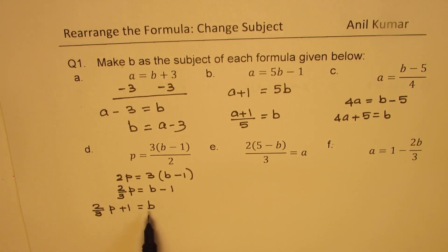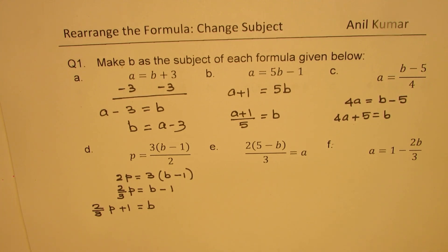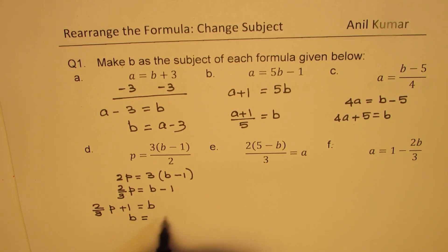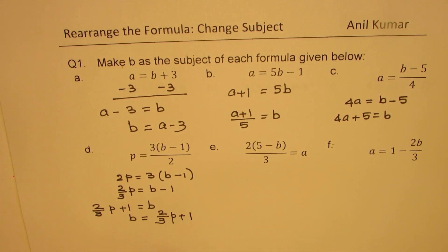When isolating B, you should normally write B on the left side, but even if you leave it on the right side it is okay. The preferred form is B equals to 2 over 3P plus 1.